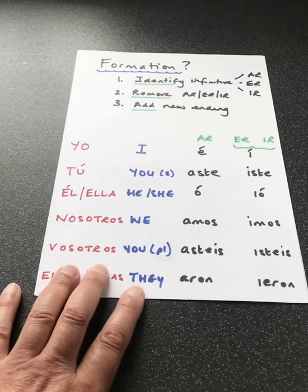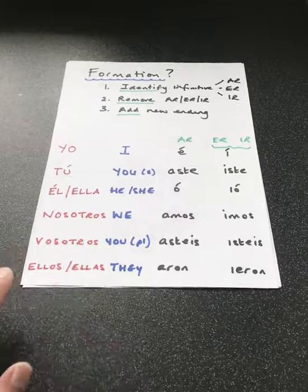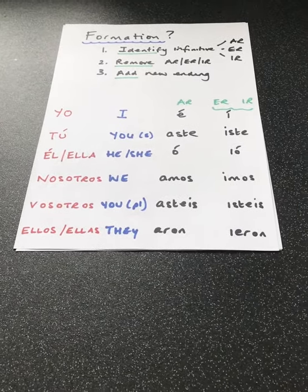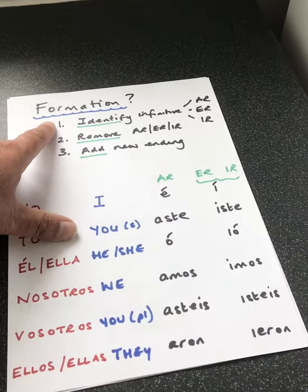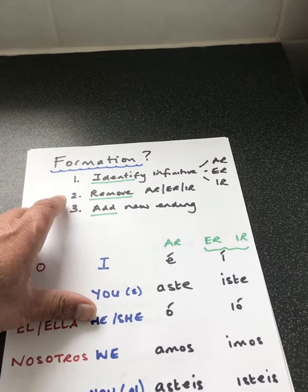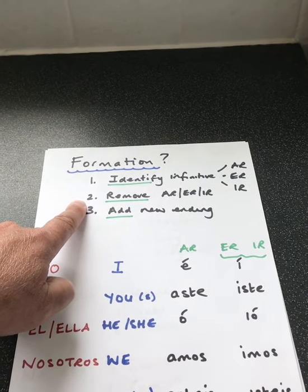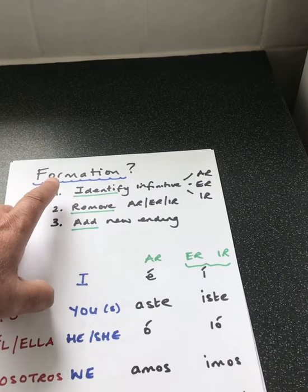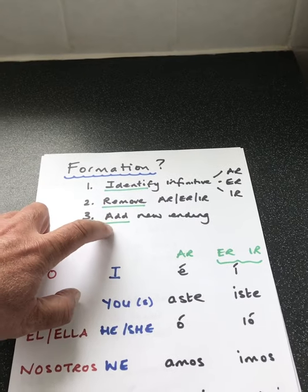So how do we form the preterite tense in Spanish? Well, it's the same way that we do with all the tenses pretty much. We have three stages: we identify the infinitive, we remove the AR, ER, or IR at the end of the infinitive, and we add our new ending. There are your three key words: identify, remove, and add.